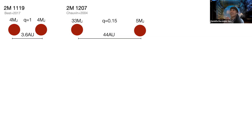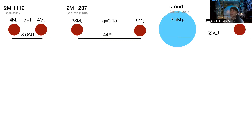One of my favorites is 2M1207b, the first directly imaged planet — in air quotes — it's about a five Jupiter mass object orbiting a 33 Jupiter mass brown dwarf at quite a large distance. The mass ratio for the system is very low. I'm highlighting separation and mass ratio as two important factors for understanding the origin of systems. There's also Kappa Andromeda — a big 2.5 solar mass star with a 12 Jupiter mass companion, but in this case the mass ratio is much, much lower, about 10 to the minus three.